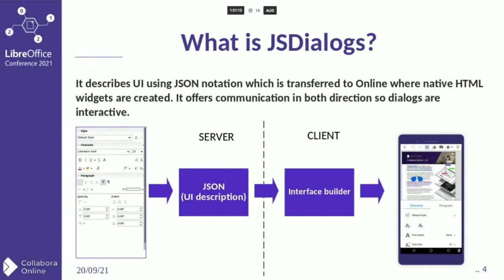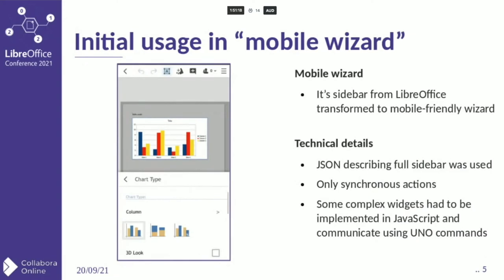Initially JS Dialogues were introduced to provide advanced editing options to the mobile Collabora Online. We reused the sidebar transformed into a mobile-friendly wizard. From a technical point of view it wasn't a perfect solution, as it was using the full JSON for the whole sidebar. So every time we did any action we had to receive a big file. We also supported only the synchronous mode, so we didn't know about any asynchronous events in the meantime. We also needed to implement some complex widgets in JavaScript because it wasn't possible to send all the needed information inside the JSON.